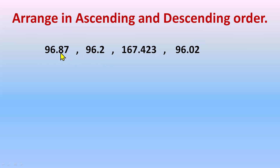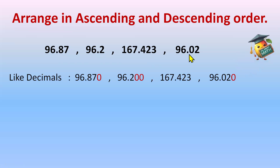To make unlike decimals into like decimals, we add zeros. The maximum number of decimal places here is three, so we'll make all numbers have three decimal places. We add one zero to 96.87 to get 96.870, two zeros to the one-decimal-place number, and one zero to the two-decimal-place number. Now all have three decimal places — these are like decimals.